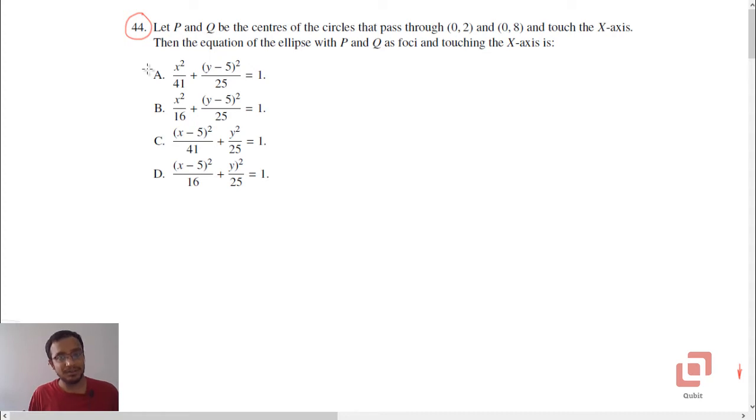This question is based on conic sections. Let P and Q be the centers of the circles that pass through (0,2) and (0,8), both of them lie on y-axis points and touch the x-axis. Then, the equation of the ellipse with P and Q as foci and touching the x-axis is, and of course we have 4 options.